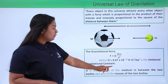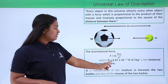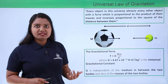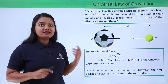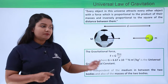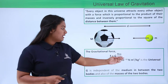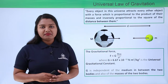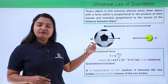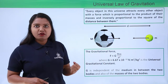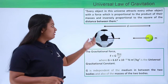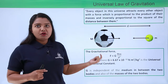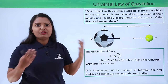Here G is a constant known as the universal gravitational constant, which has a value of 6.67 × 10⁻¹¹ newton meter squared per kg squared. This value of G shows the strength of the gravitational force of attraction between any two bodies in the whole universe.